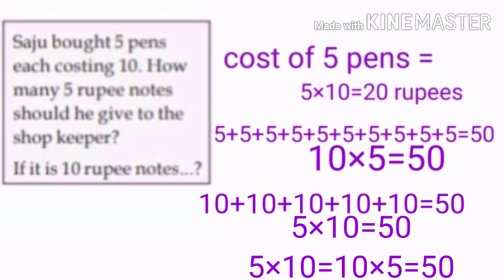That is, 5 into 10 is equal to 10 into 5 is equal to 50. What do you understand from these? In multiplication there is no change in the answers, even when the order of the numbers is changed.